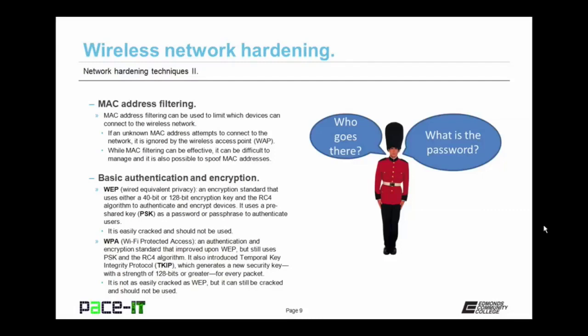Better than WEP is WPA — Wi-Fi Protected Access. It's an authentication and encryption standard that improved upon WEP, but still uses PSK and the RC4 algorithm. To increase security, it also introduced Temporal Key Integrity Protocol, or TKIP, which generates a new security key for every packet with a strength of 128 bits or greater. It's not as easily cracked as WEP, but it can still be cracked and should not be used unless absolutely necessary.